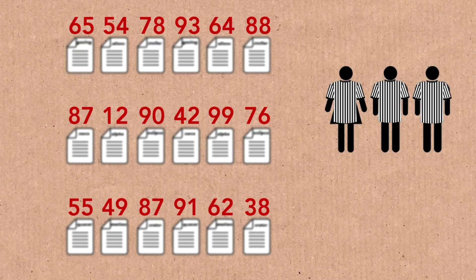Some panels have reviewers give grades to proposals before they even meet, then get together to compare and refine those grades. Others start from scratch in the meeting. In some, everyone assesses all the proposals in detail; in others, one or two members are the lead for each application. You have to give a score in the end to decide which proposals are better than others and actually order them for telescope time allocation.